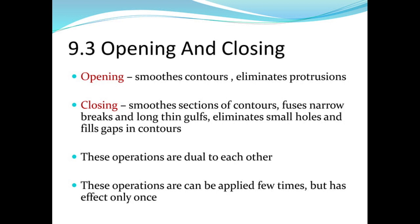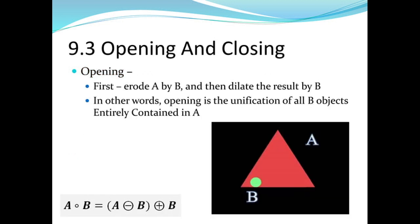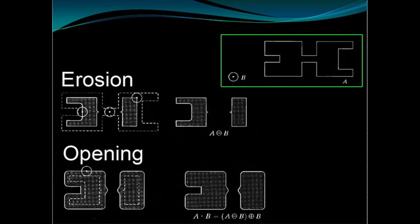Opening smooths contours and eliminates protrusions. Closing smooths sections of contours, fuses narrow breaks and long thin gulfs, eliminates small holes, and fills gaps in contours. These operations are dual to each other and can be applied multiple times but have effect only once. To perform opening: first erode A by B, then dilate the result by B. In other words, opening is the unification of all B objects entirely contained in A. It is represented by the expression A ∘ B.